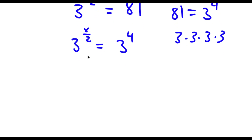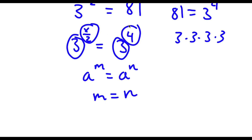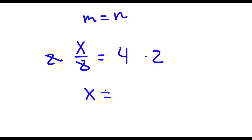Now, if I have something in the form a to the power of m is equal to a to the power of n, then this means that m is equal to n. So in this case, I have 3 to the power of x over 2 is equal to 3 to the power of 4, and notice how both of these bases are the same — we both have 3s for bases — meaning that the exponents x over 2 and 4 are equal to each other as well. So I have x over 2 is equal to 4. Now this is just a simple equation to solve: all I have to do is multiply both sides by 2, so these two cancel out, and I'm left with x is equal to 4 times 2, which is 8.